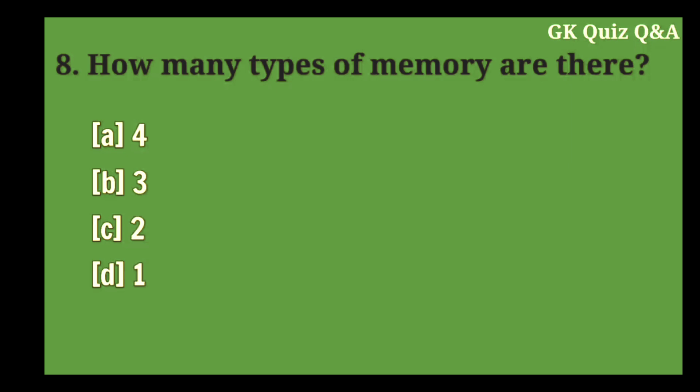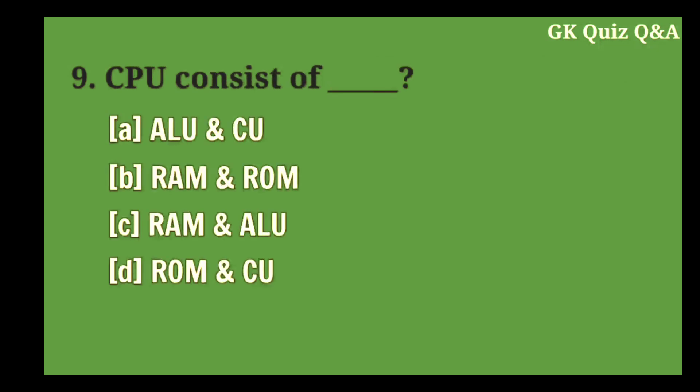Answer C: Two types of memory are there. CPU consists of? Answer A: Both ALU and CU.